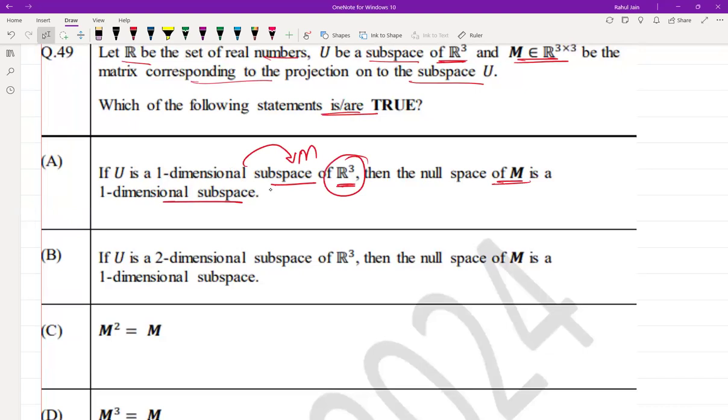And the rank of M is one because it projects onto a one-dimensional space. So the rank of M will be one. So the dimension of the null space, that is 3 minus 1, that is 2. So the null space is actually two-dimensional, it is not one-dimensional. Thus it is false.